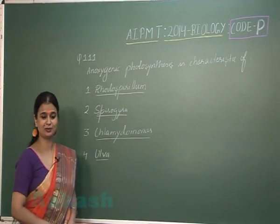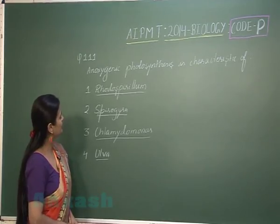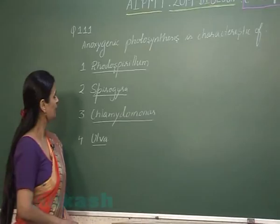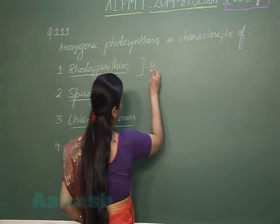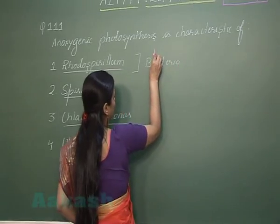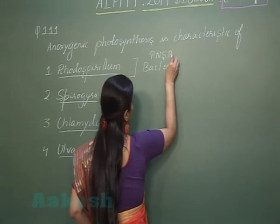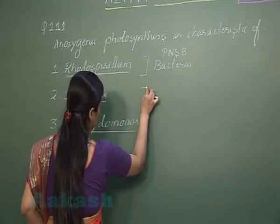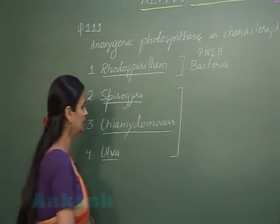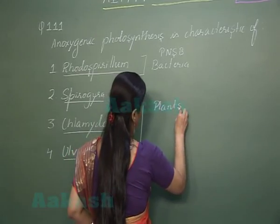Let's discuss question number 111: in which of the following organisms is there presence of anoxygenic photosynthesis? Rhodospirillum is a bacteria — it comes under the category of purple non-sulphur bacteria. The other option, Spirogyra, represents green algae, which are lower plants.